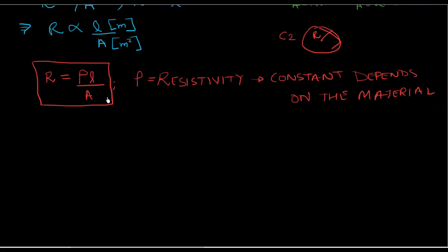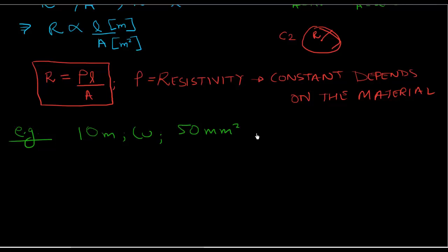Let's do an example with this equation. You're given a conductor that is 10 meters in length, it's a copper conductor, and it has a cross-sectional area of 50 millimeters squared. The resistivity of copper is 1.77 times 10 to the power of minus 8. What would the units of resistivity be?